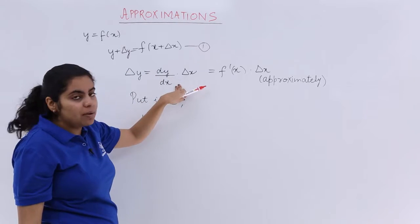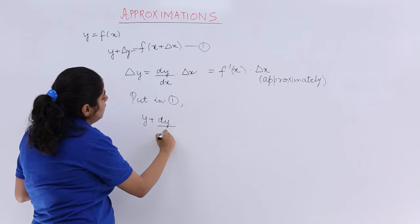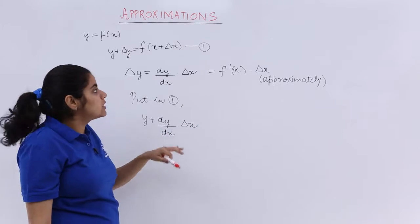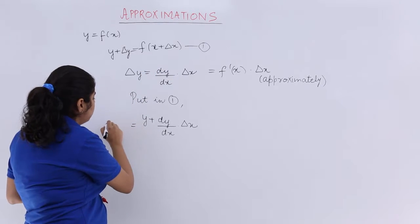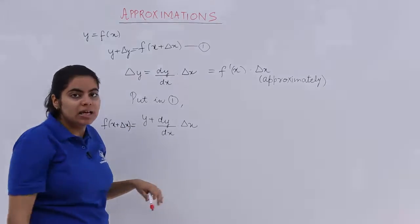Now what is del y? Del y is nothing but dy upon dx. So it is nothing but dy upon dx multiplied by del x. And that is what is equal to f of x plus del x. So that is equal to f of x plus del x.